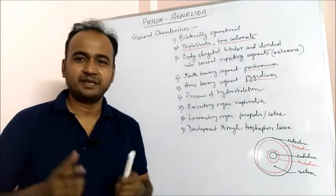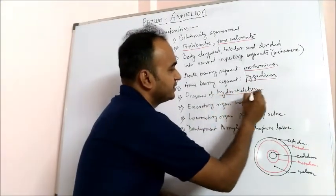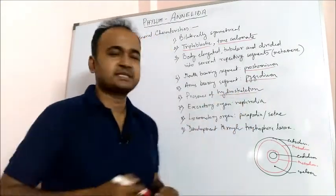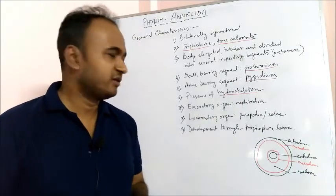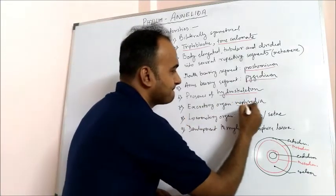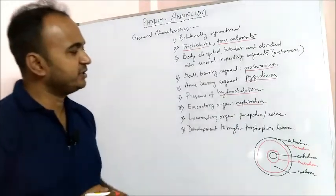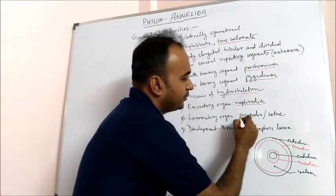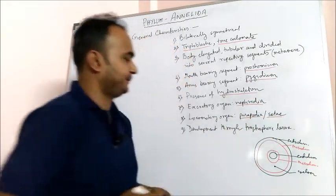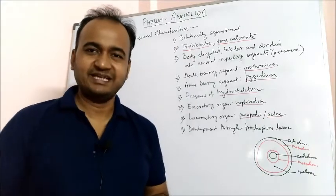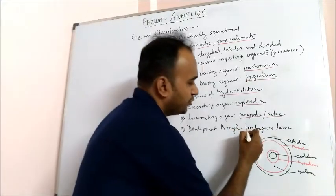They possess a hydroskeleton which helps in their locomotion. Their excretory organ is the nephridia, and their locomotory organs consist of parapodia or setae. The larval form of annelids is known as the trochophore larva.